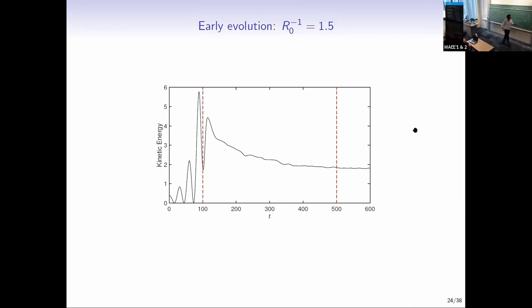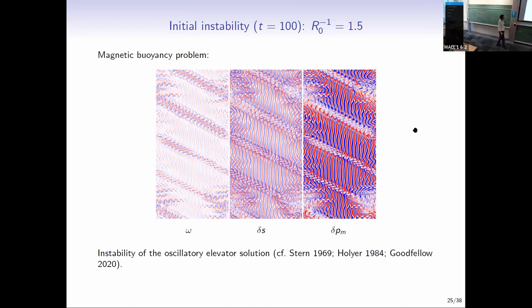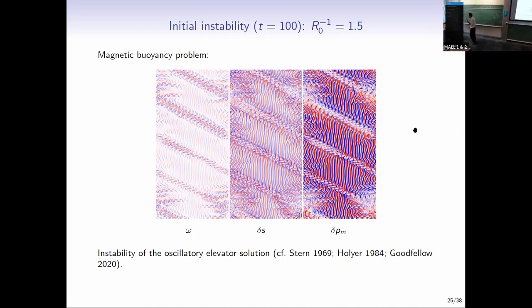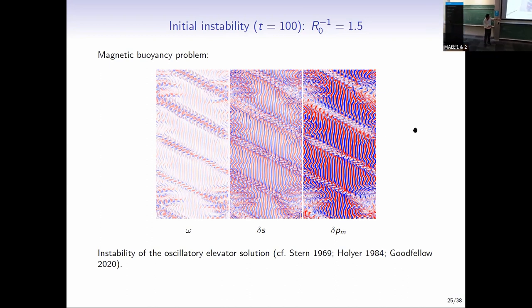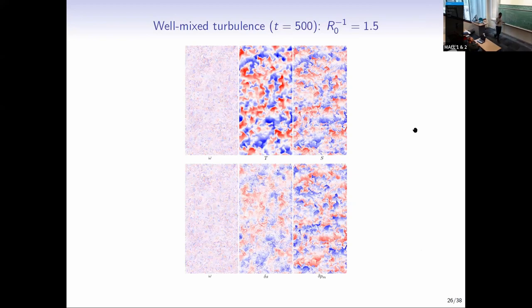There is a nonlinear elevator solution that would carry on forever, but it's unstable to secondary instabilities. The instability of the initial elevator solution is an interesting problem in itself. After that instability has had its effect, you get a kind of well-mixed state.